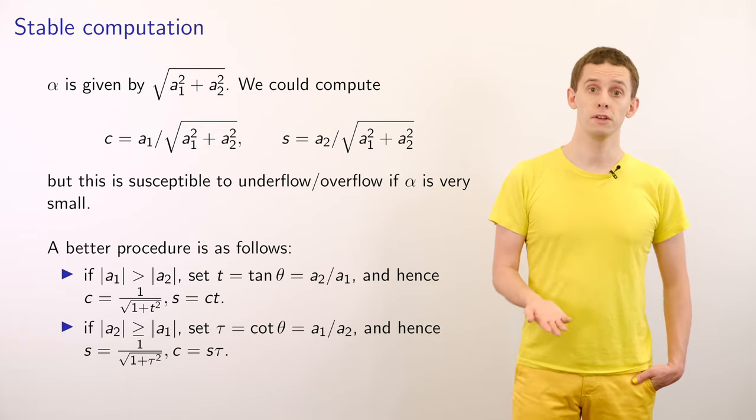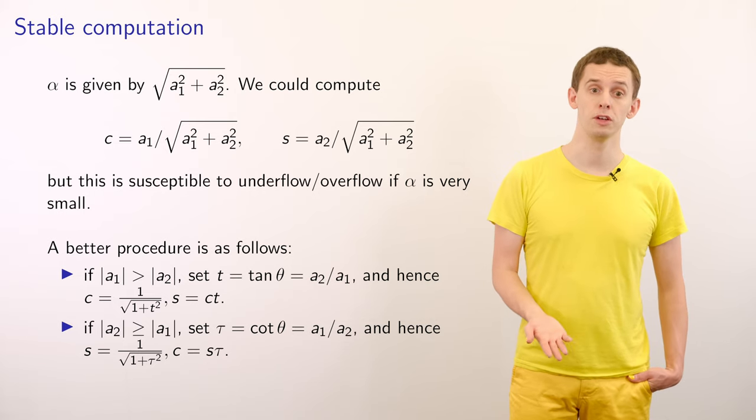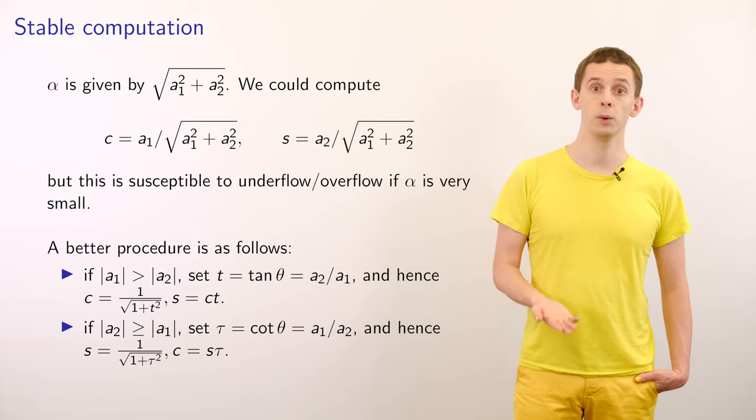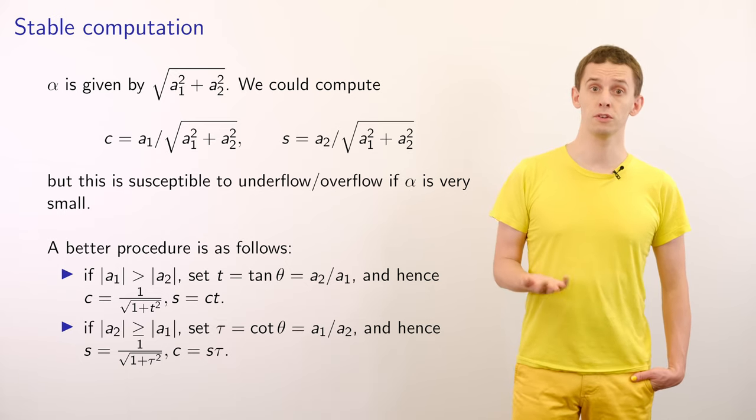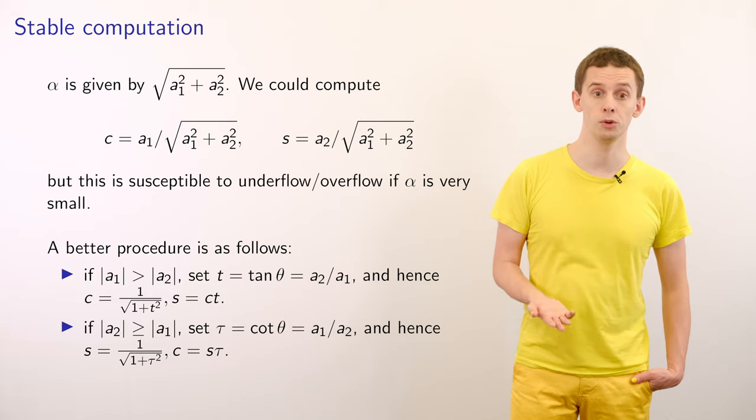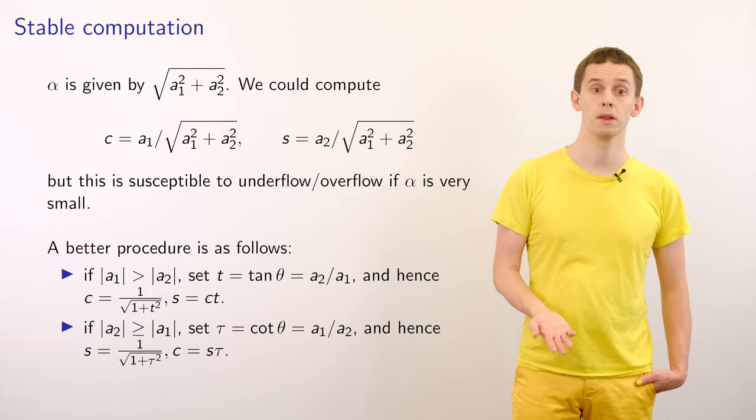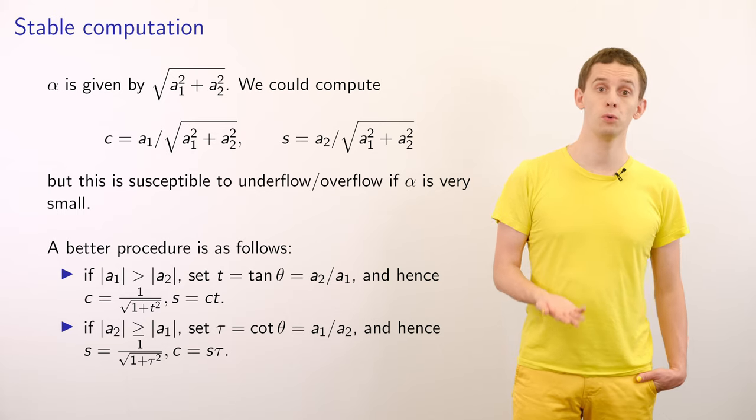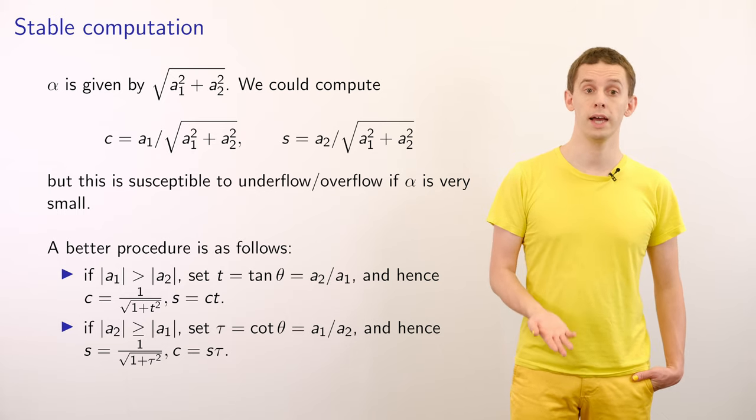So we can avoid this with the following better procedure. Suppose that the magnitude of a_1 is greater than the magnitude of a_2, then we can define t, which is equal to tan of theta, as a_2 divided by a_1. And hence, c is equal to 1 divided by the square root of 1 plus t squared, and s is equal to c times t.